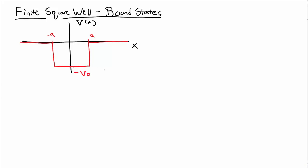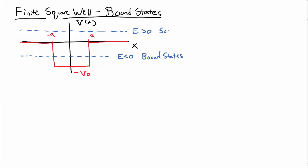In this video, I want to talk about the bound states for the finite square well. Recall that when we have energies for this type of square well that are less than zero, these will be bound states because the energy is less than the potential at infinity. Energies which are greater than zero are going to be scattering states. We're going to be focusing in this video on the bound states; we'll talk about scattering states elsewhere.